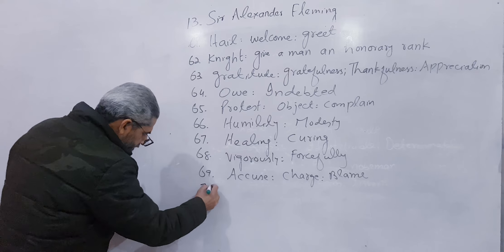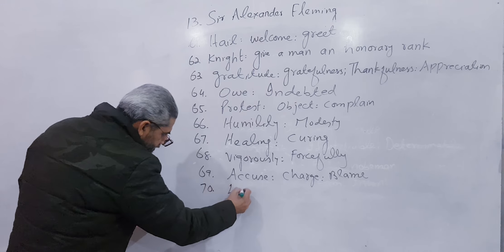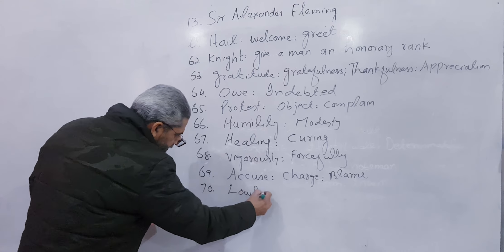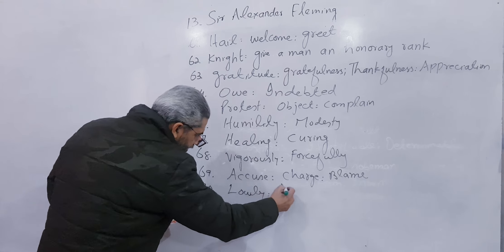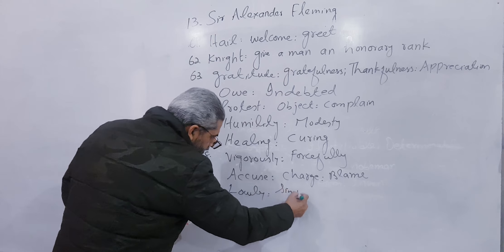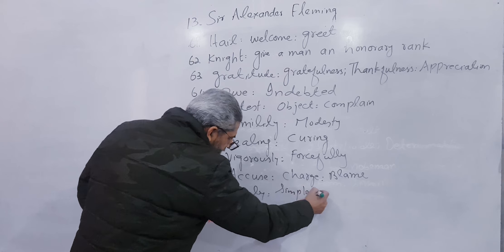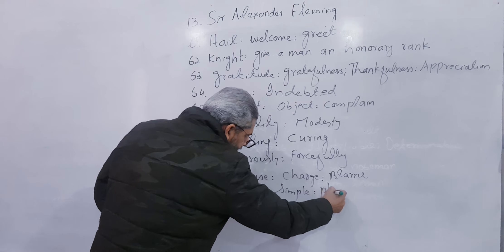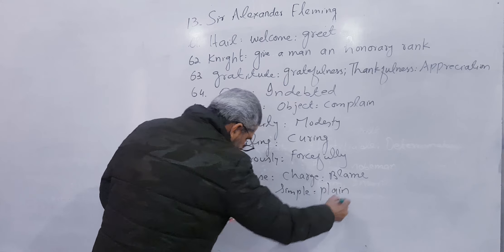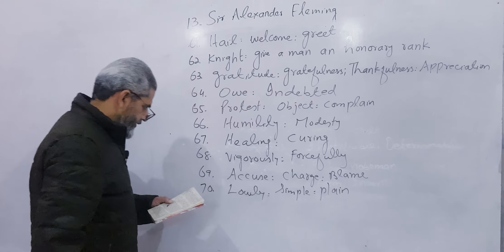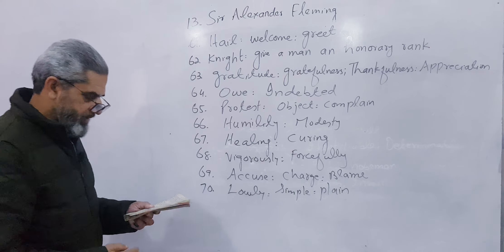Number 70: Lowly. It means simple, plain — bilkul sadha (completely plain). Note it carefully.